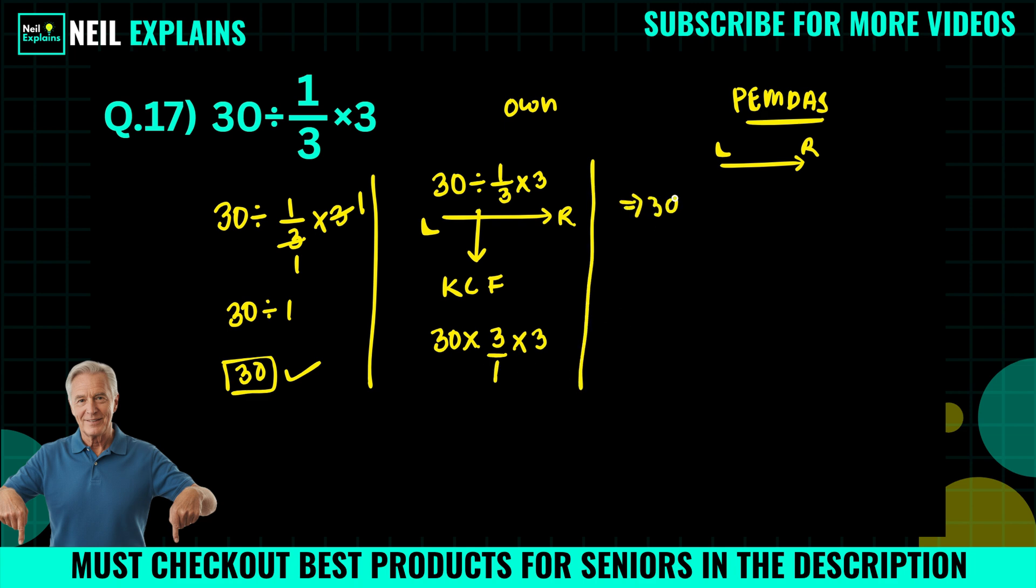30 times 3 times 3 which equals to 90 times 3, and 90 times 3 equals to nothing but 270.